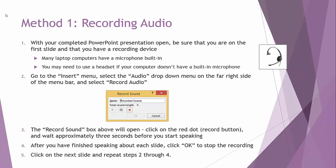Go to the Insert menu at the top of your screen and select the Audio drop-down menu on the far right side of the menu bar. Then select Record Audio. The Record Audio box will open. Click the red dot, which is the Record button, and wait about three seconds before you start to speak. After you've finished speaking about each slide, click OK to stop the recording, then click on the next slide and repeat. So you are recording your voice one slide at a time, stopping and restarting on each slide.